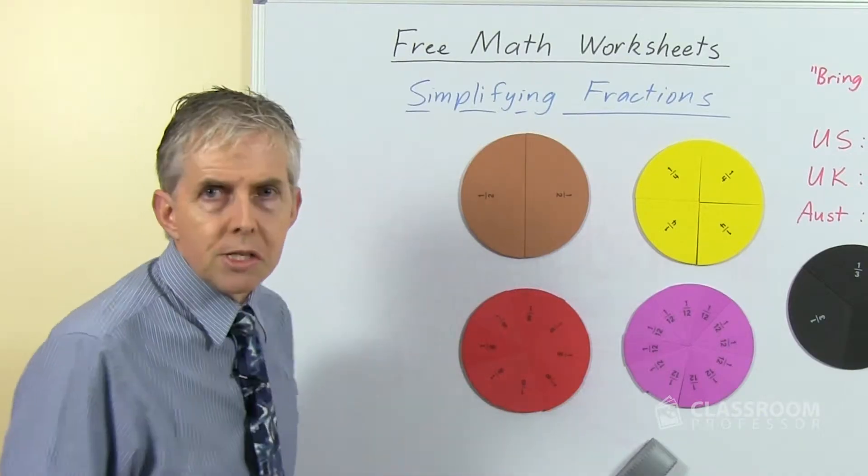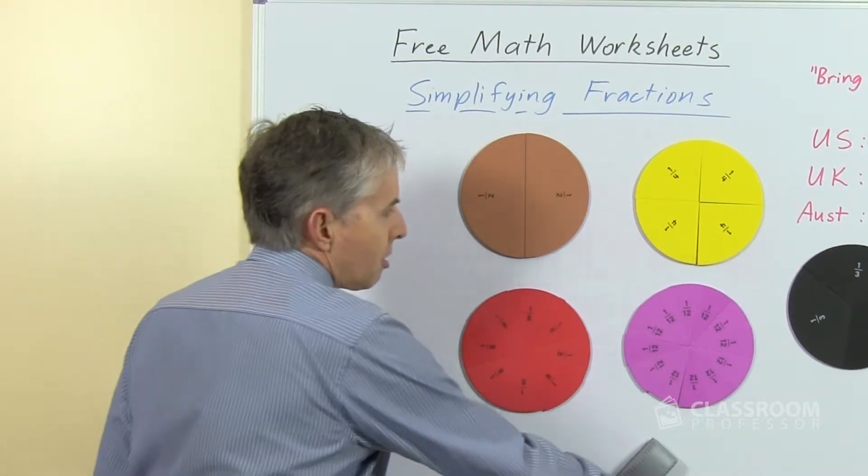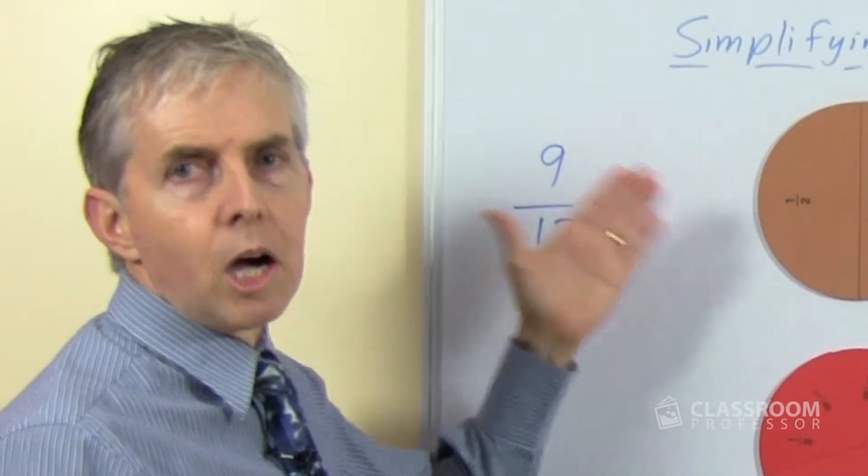So we're going to start with a fraction, let's start with a fraction nine-twelfths, and before we go any further I'm going to just point out that we want students to read this as nine-twelfths, not nine over twelve.